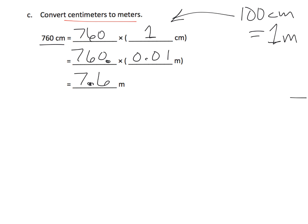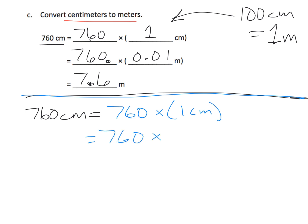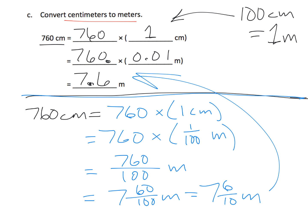We could also do this with fractions. That's 760 copies of one centimeter, which means 760 copies of one hundredth of a meter. So that's 760 hundredths of a meter, which equals 7 and 6 tenths of a meter, or 7.6 meters. Both approaches — decimal and fraction — work.